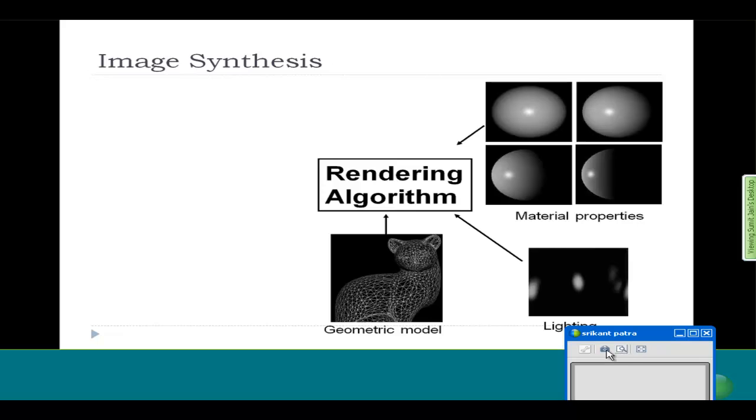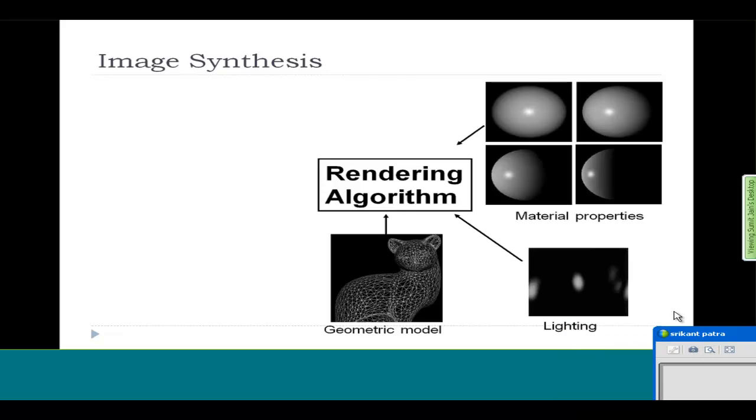This is what the term rendering in computer graphics is all about. Basically, it takes in the geometry, the lighting, the material properties, and then it forms the image. This is loosely similar to the camera that you have in the real world. Given all the information, it gives you the image. And that's how we get this rendered image.